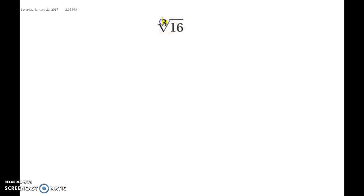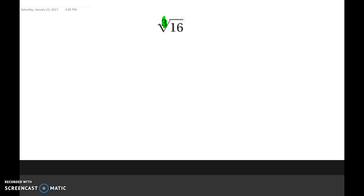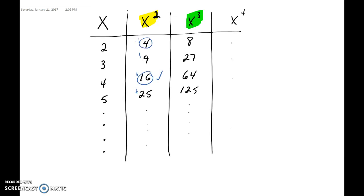The last one we're going to simplify is the cube root of 16. This is the cube root, not the square root, so we need to pay attention to that index. Since it's the cube root, we look at our x cubed column in the chart and go down asking: do any of these divide evenly into 16? We only look at the x cubed numbers — if a number divides into it but is not a perfect cube, it does us no good.